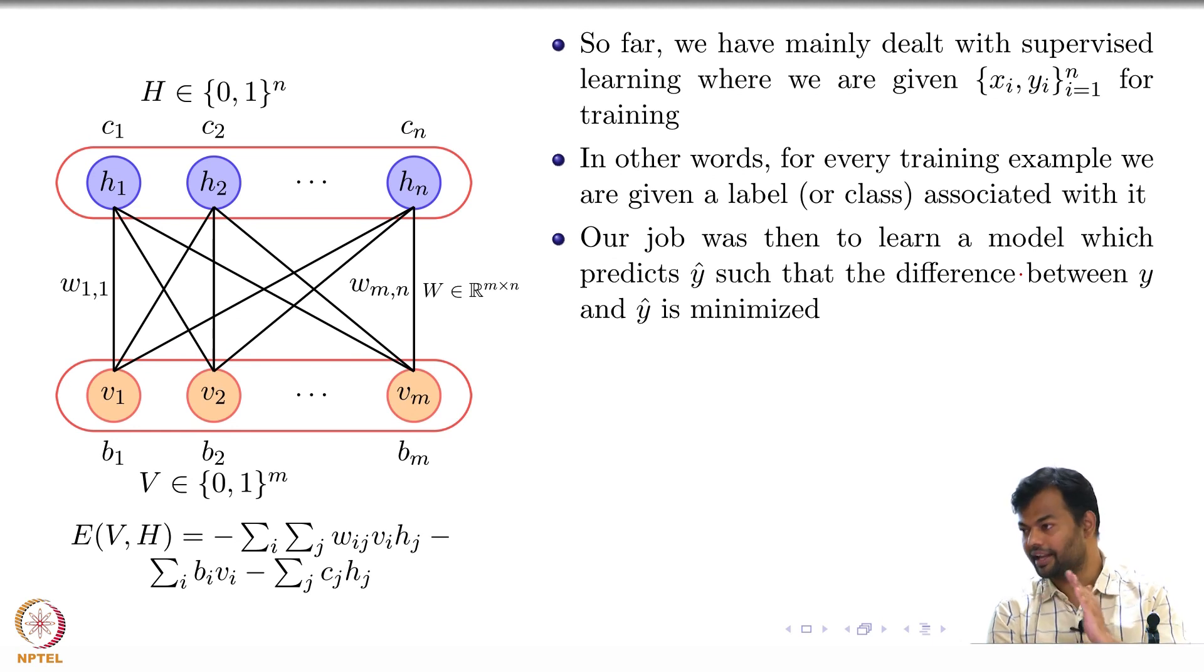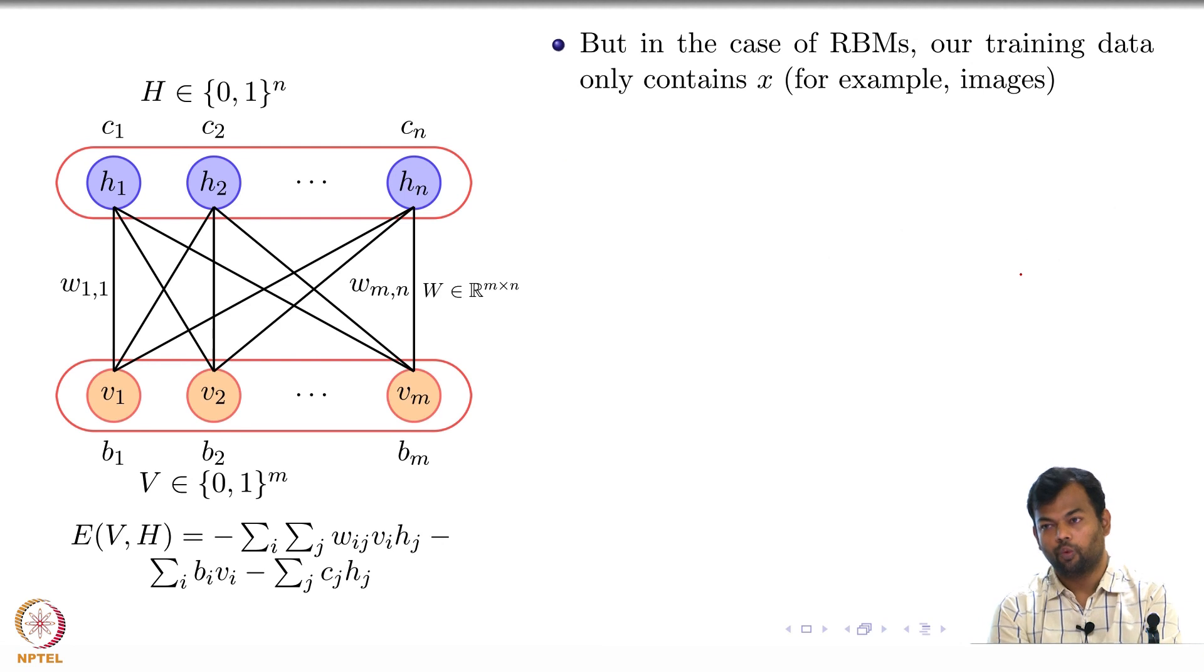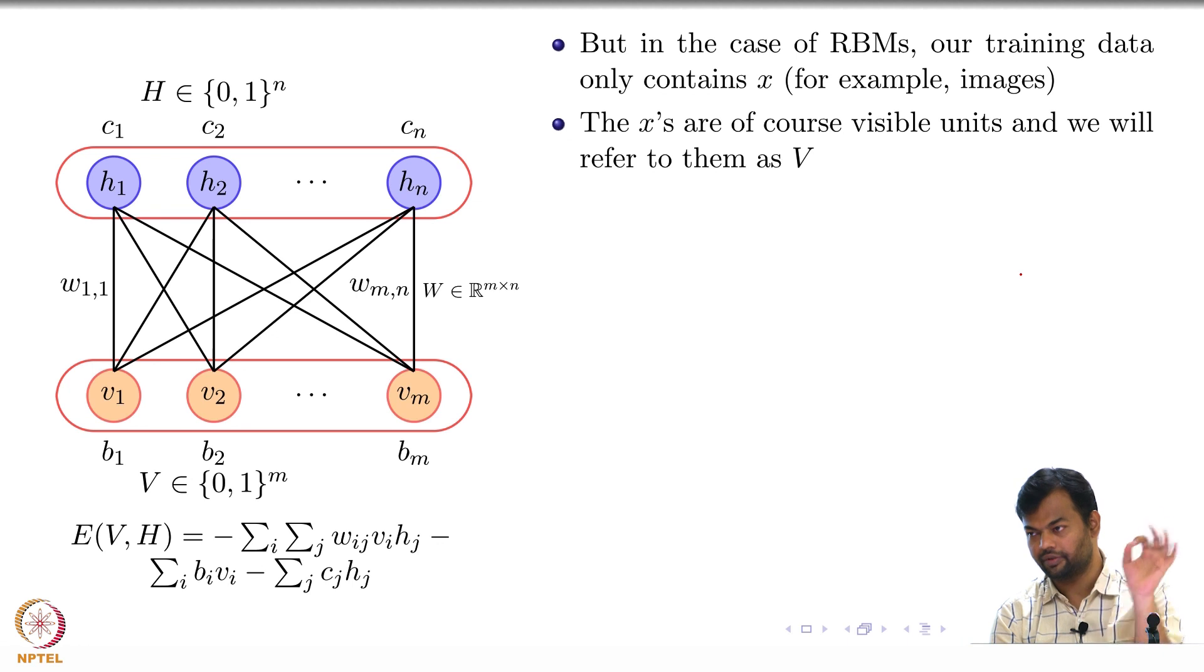So now instead of the difference between Y and Y hat which has been our story always, what can we maximize? It contains only V of X, and just for sake of consistency of notation, these Xs are nothing but the visible units. So irrespective of whether it is images or whatever, I am just going to call them as V.